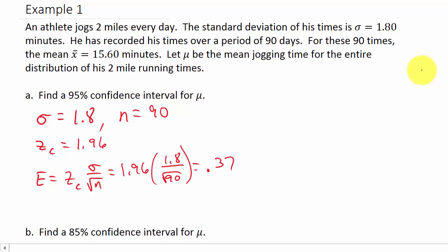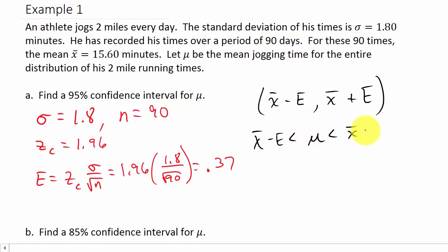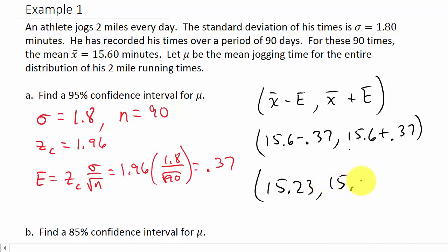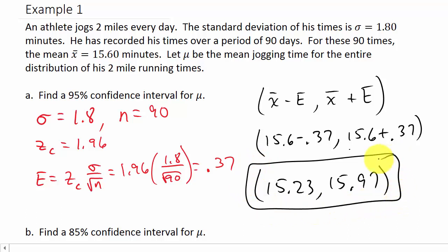Now we have our confidence interval: X-bar minus E to X-bar plus E — written as an inequality it's X-bar minus E less than mu less than X-bar plus E. Plugging in: 15.6 minus 0.37 to 15.6 plus 0.37. So our confidence interval is 15.23 to 15.97.